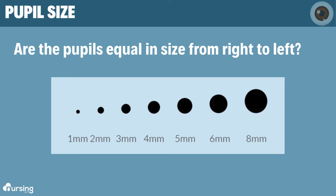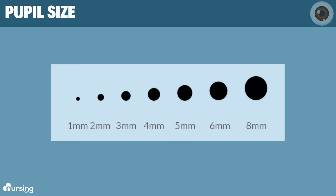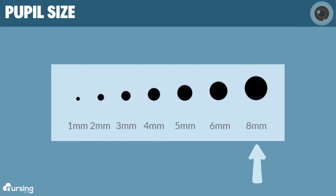Then we're going to look at size. Here are a few examples of sizes — pupils could be one millimeter, two millimeters, four, six, eight, and so on.